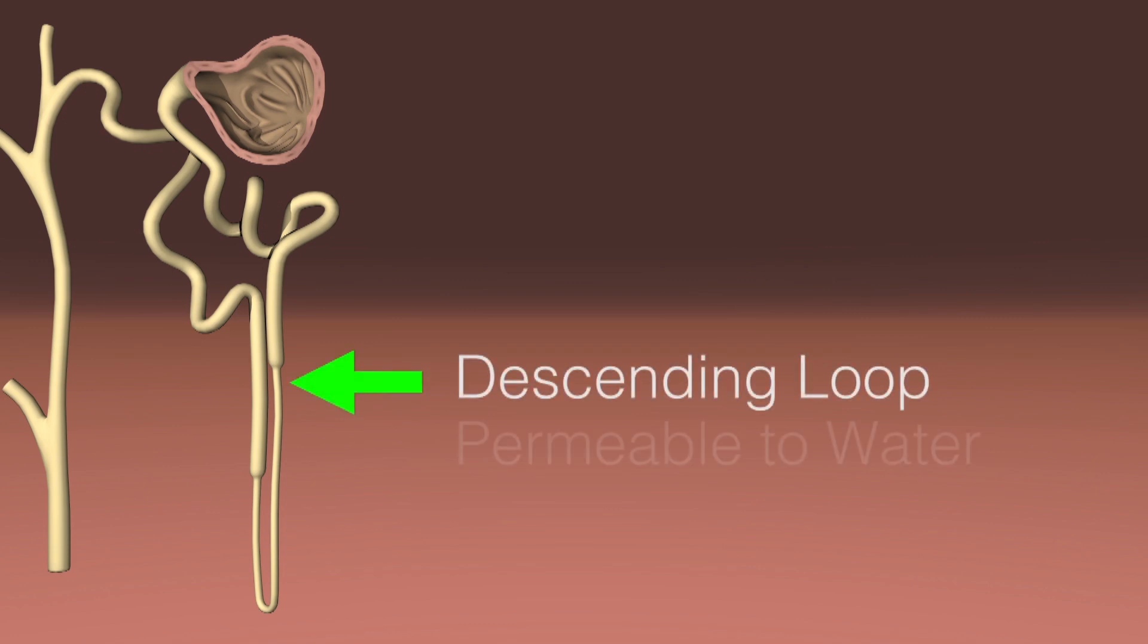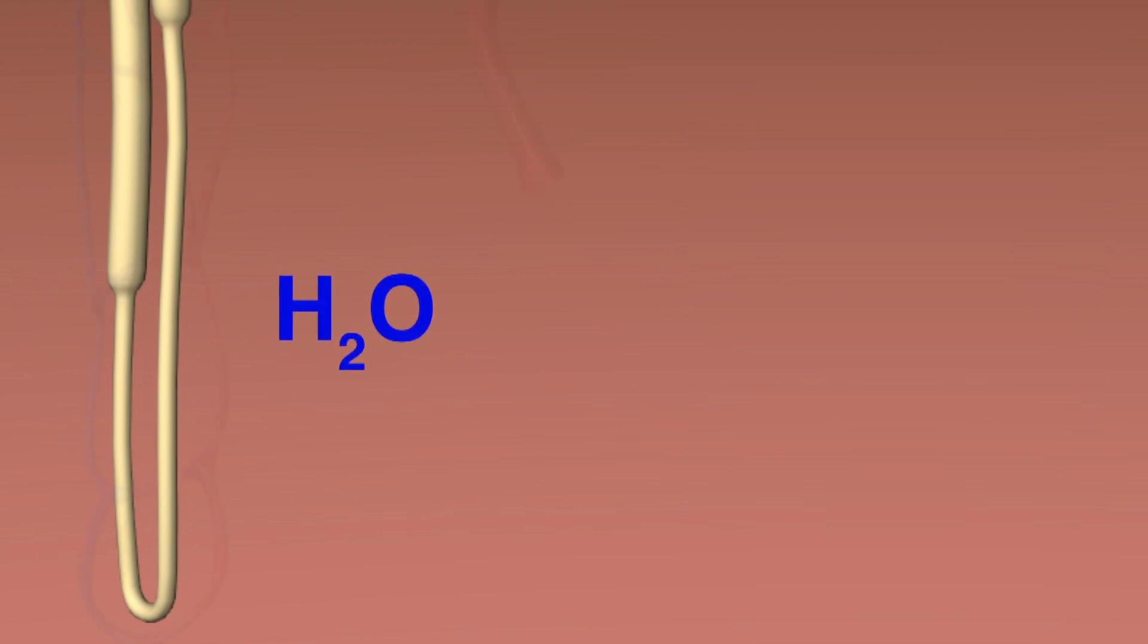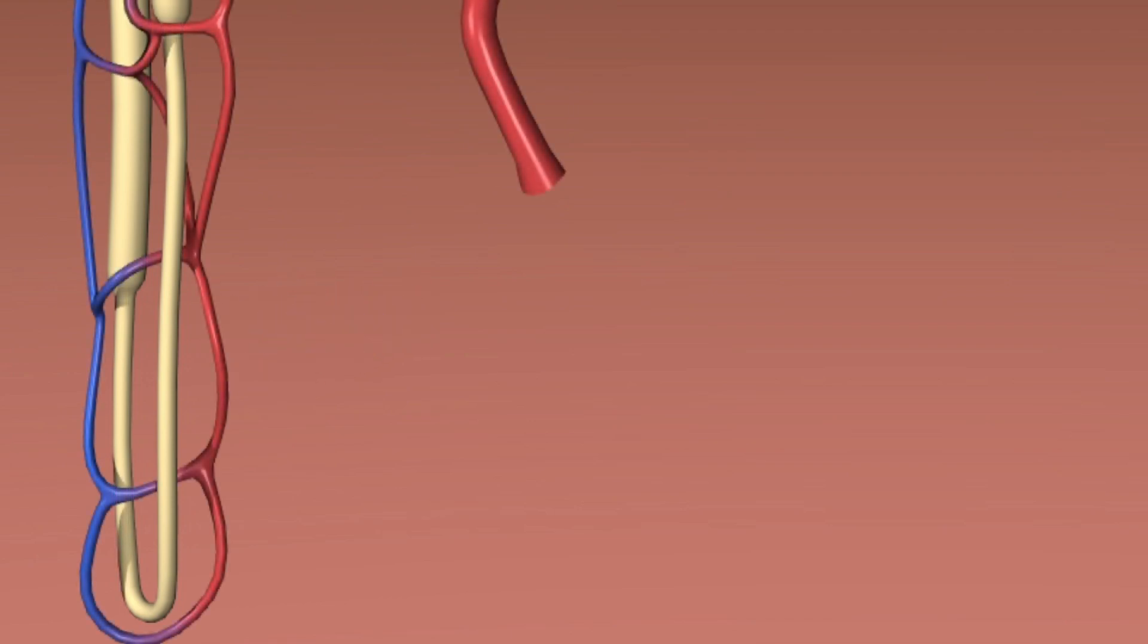So the descending loop of Henle is extremely permeable to water, but it's impermeable to ions. So water is able to passively diffuse out of the descending limb where it is reabsorbed by the vasa recta, the vessels that surround the loop of Henle.